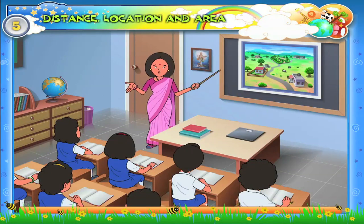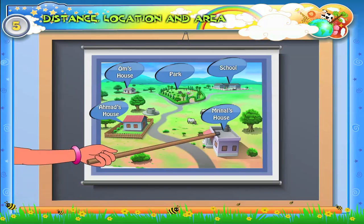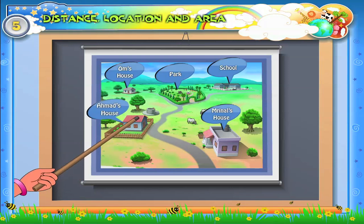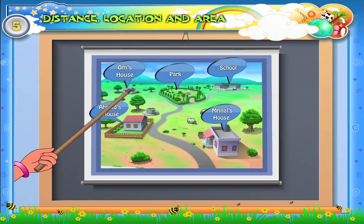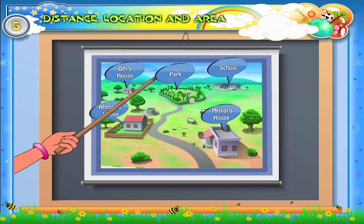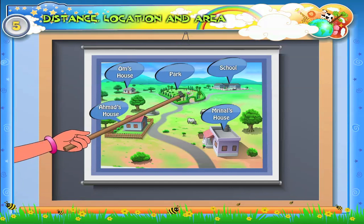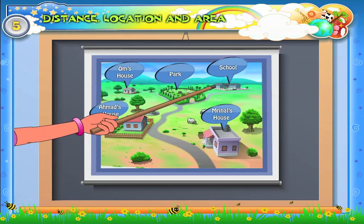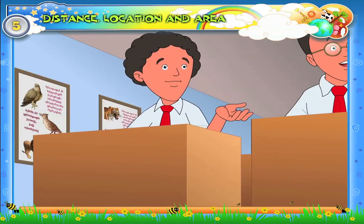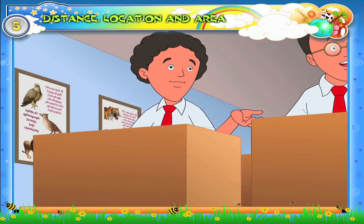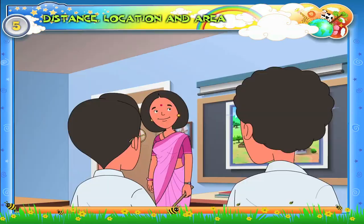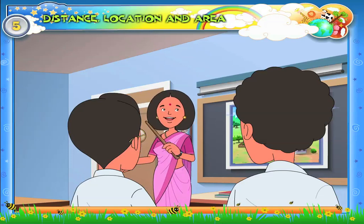Children, let's have a look at this picture. This is Minnell's house, this is Emma's house, and this is Om's house. This is a park and this is a school. Madam, I see a well near Emma's house. That's right, Arun — we can see a well near Emma's house.